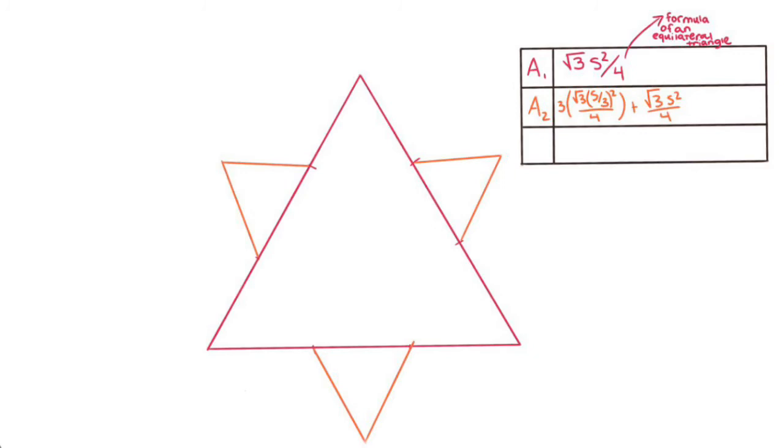The reason for the s over 3 is because the side lengths of our triangles now are only one-third of the original side length. We continue this pattern on the next level, adding 12 new triangles with a side length of s over 9.